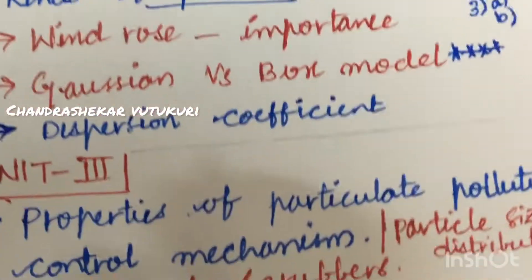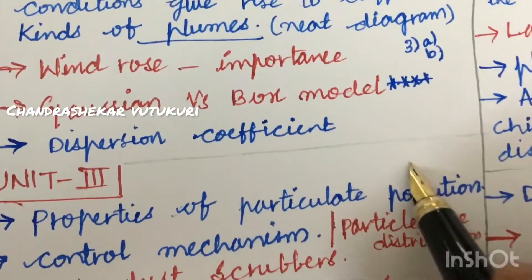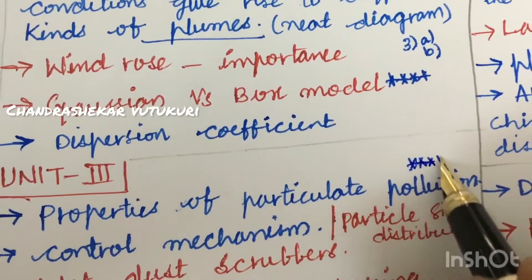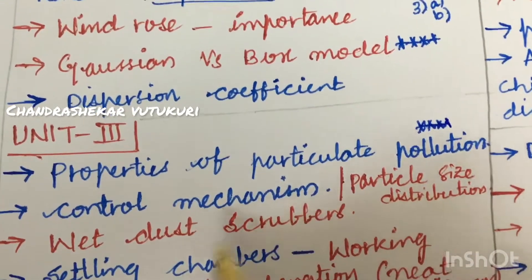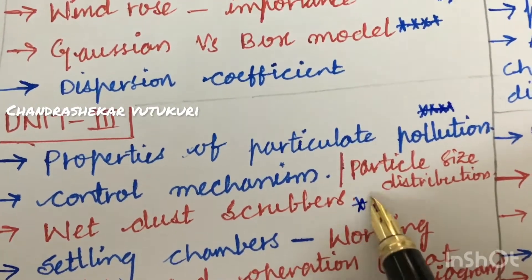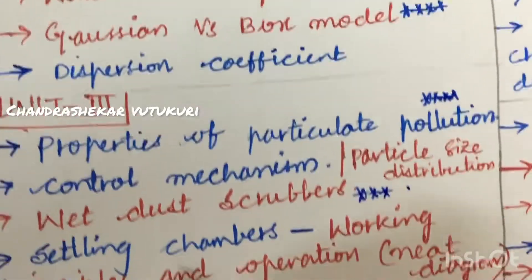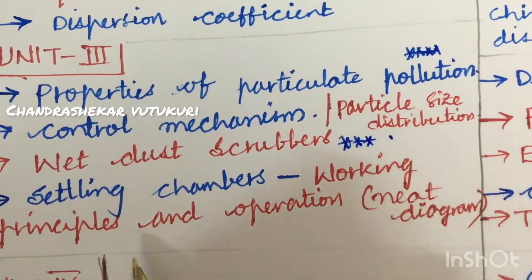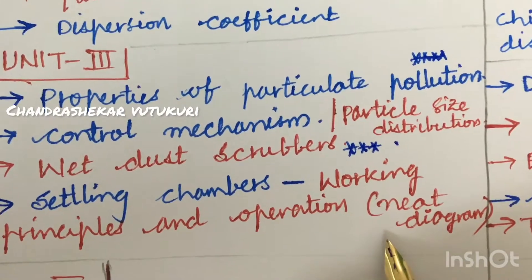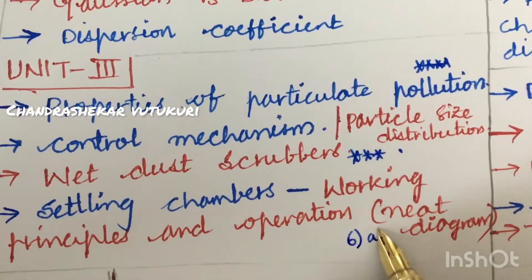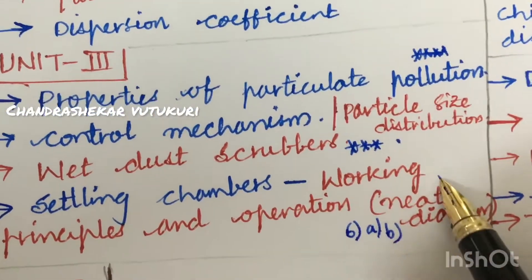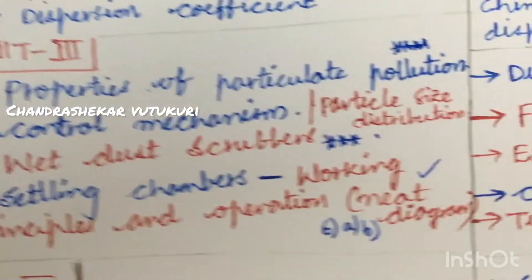Later, let us look at Unit 3. The properties of particulate pollution is said to be very very important and gunshot question. And the control mechanism and the particle size distribution and wet dust scrubbers is said to be very very important question. And the settling chambers, the working principle and the operation along with the neat diagram. And from this part, we can expect 2 questions for sure this time. It is all about 6A as well as 6B. And if this is asked, this is asked for the 15 mark.